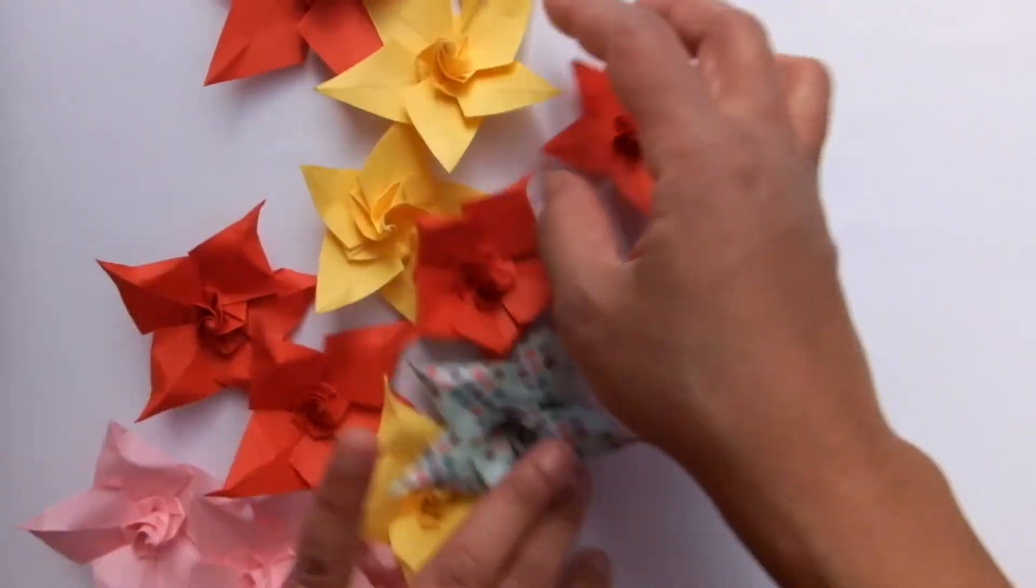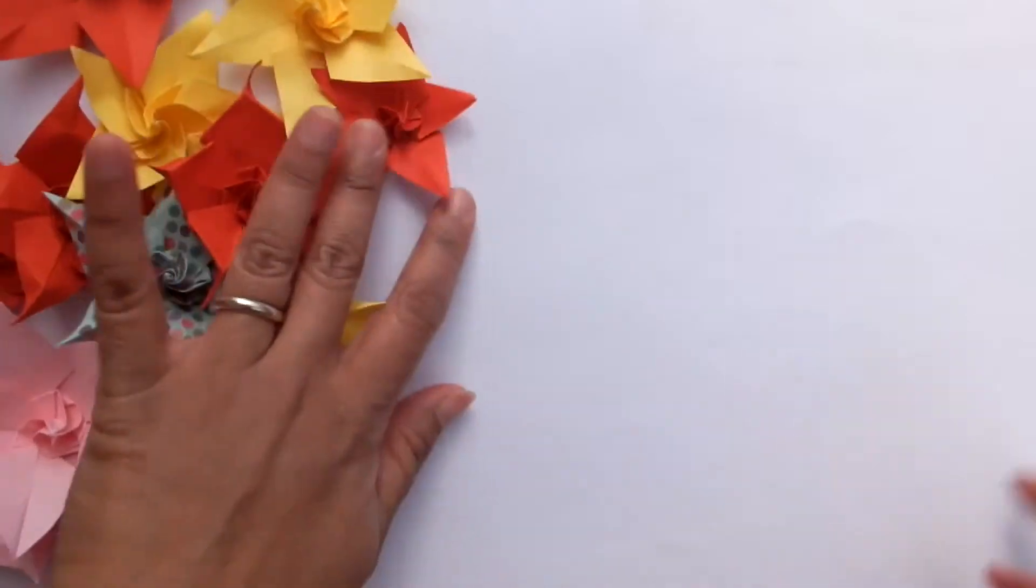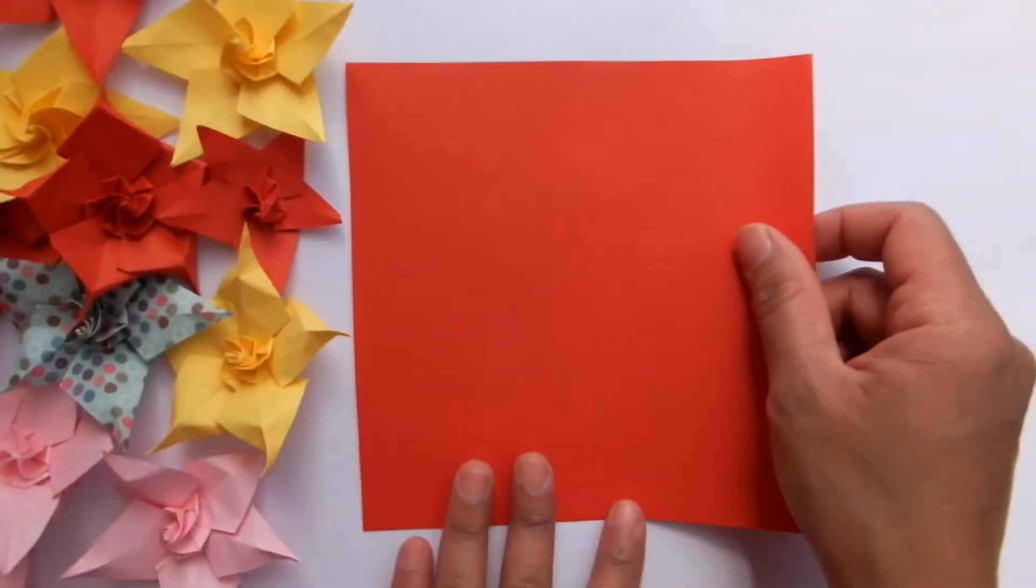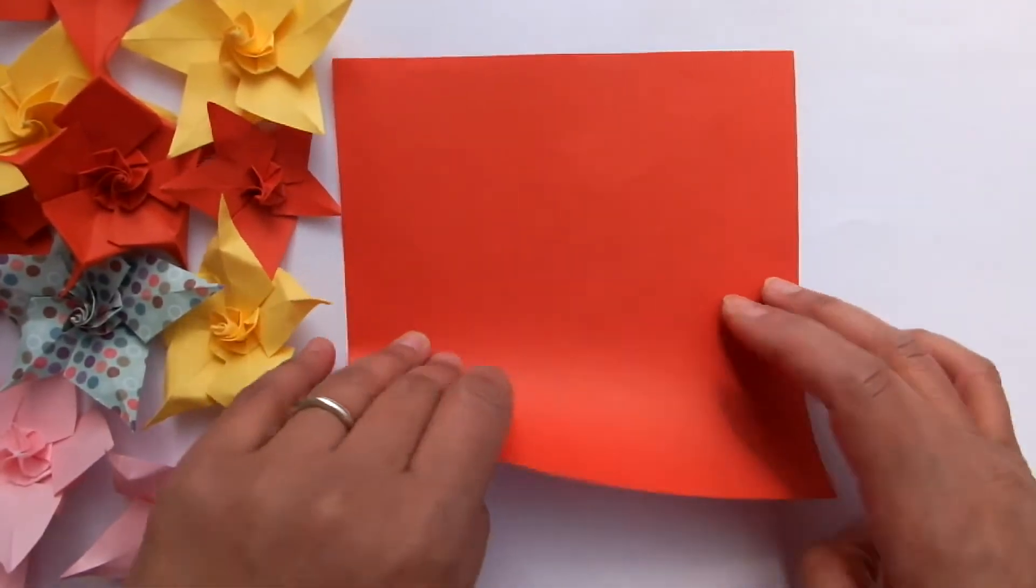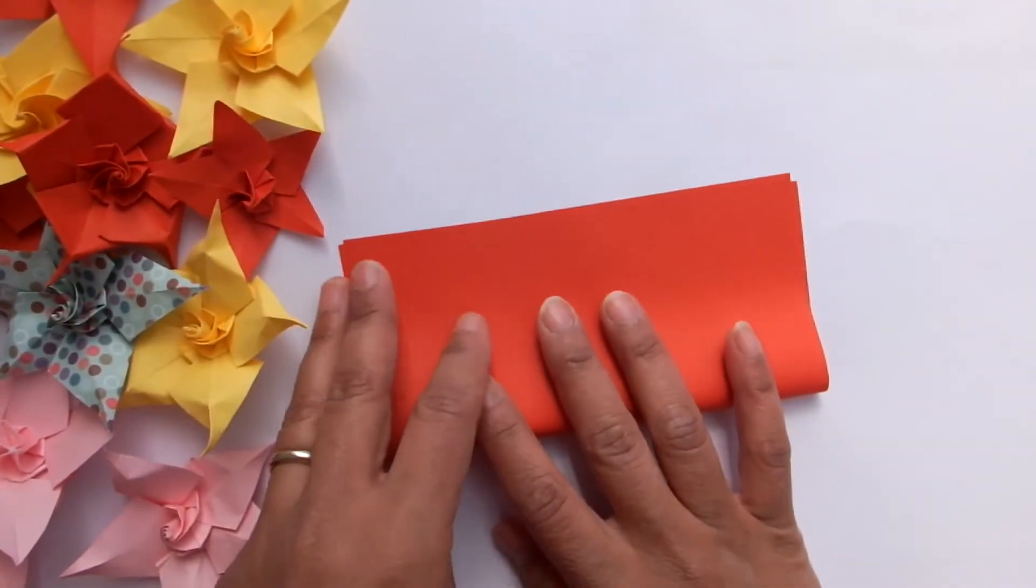Okay, let's start. We need a square paper and we want to make the pentagon shape out of this square paper. So let's fold it half.